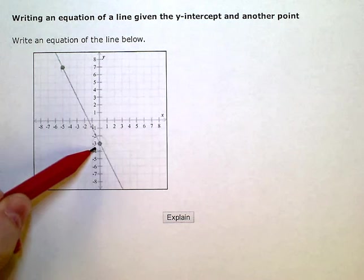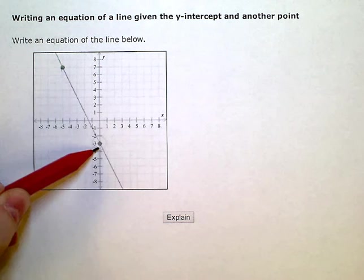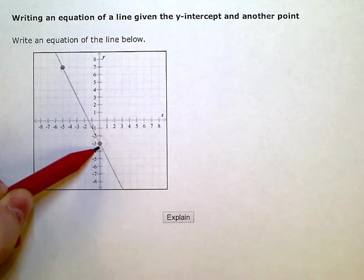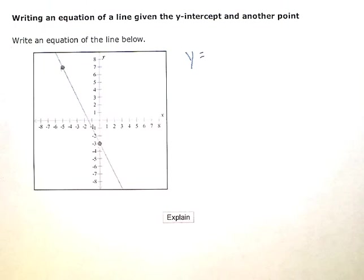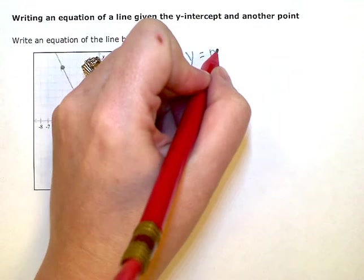So I have two points on this graph that they're giving me, two dots. This one is the y-intercept. If we know the y-intercept, usually the easiest equation to write is slope-intercept form, y equals mx plus b.